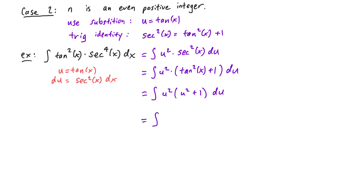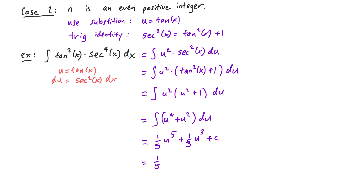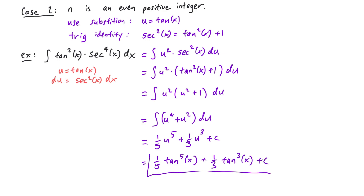Distributing the u squared, we get the integral of u to the fourth power plus u squared du. Using the power rule, we get one-fifth u to the fifth power plus one-third u to the third power plus c. Then lastly, we write this back in terms of x to get one-fifth tangent to the fifth power of x plus one-third tangent to the third power of x plus c. And that's our antiderivative for tangent squared of x times secant to the fourth power of x.